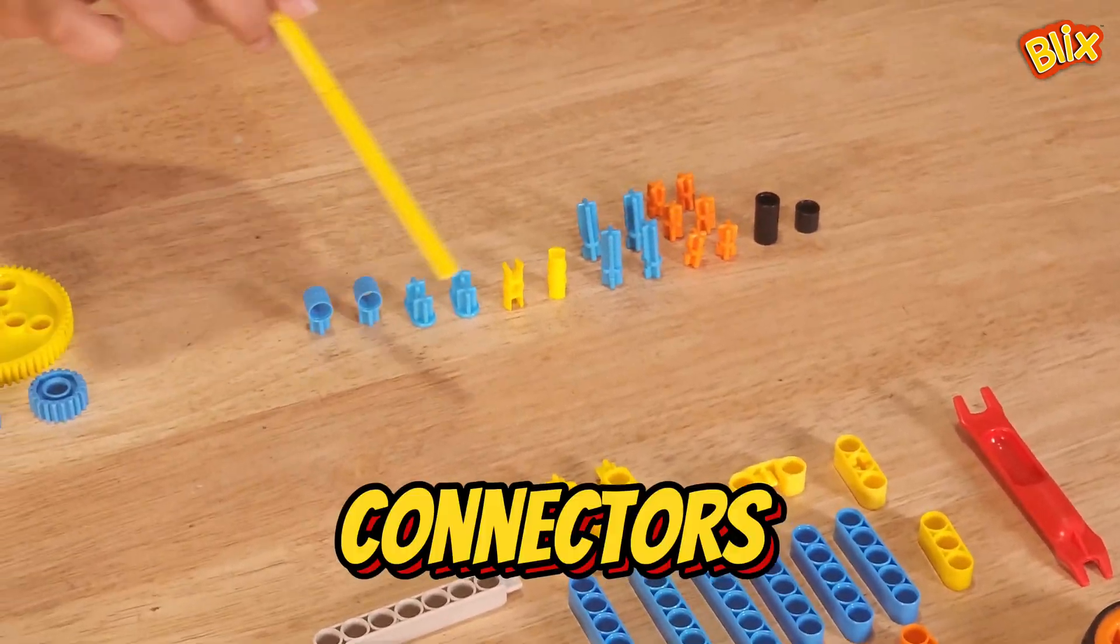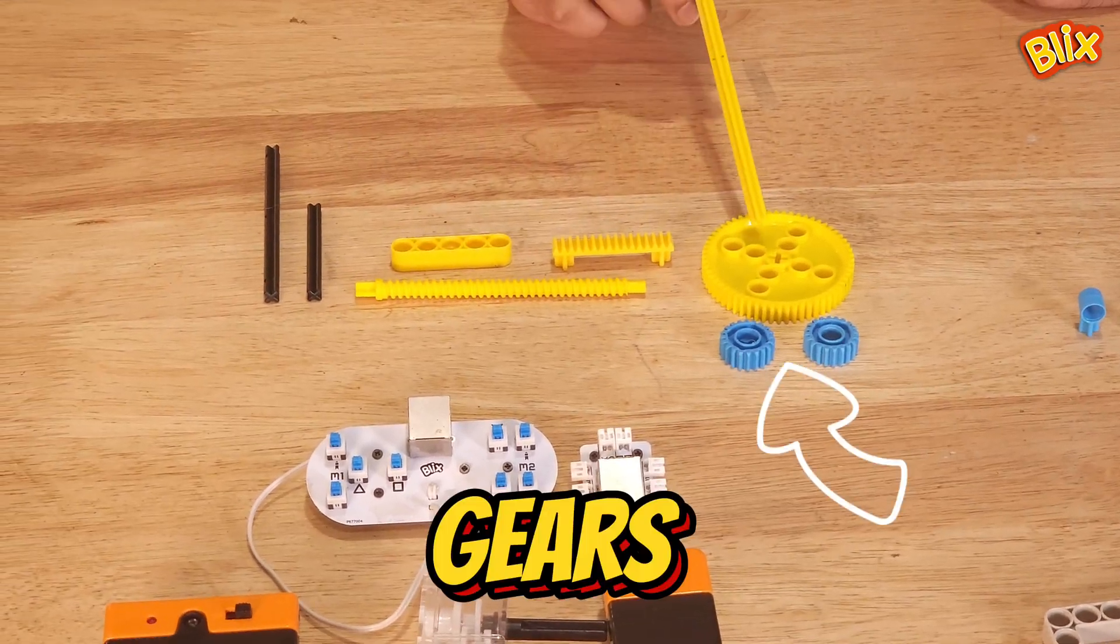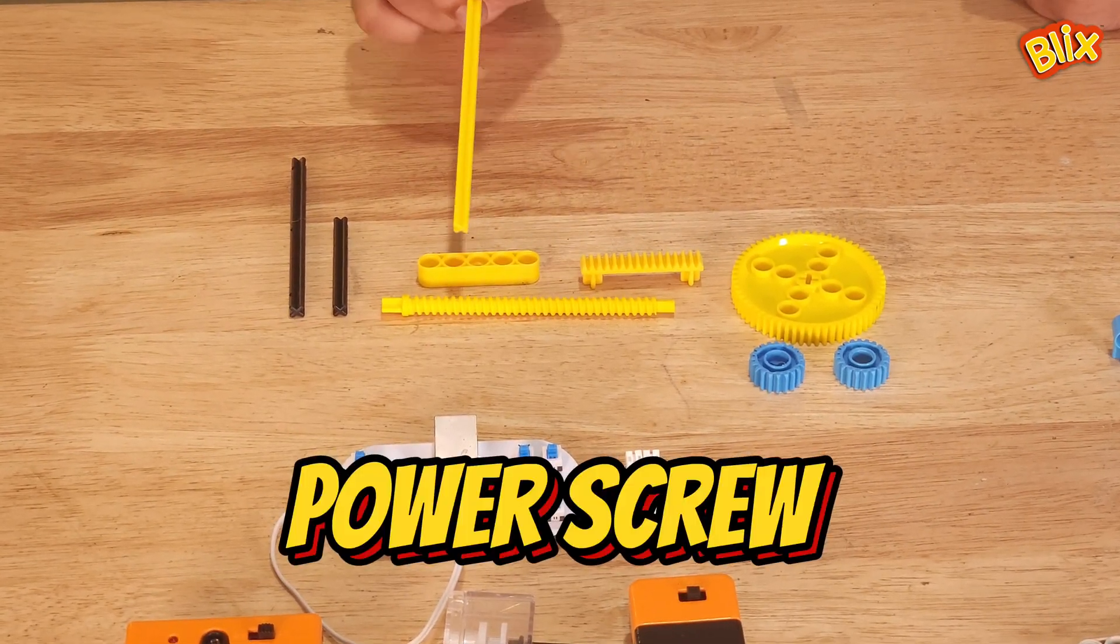These parts are called connectors and are used to connect different pieces together. These are special parts composed of gears of different sizes, a rack, and a power screw.